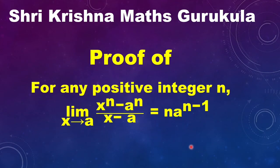Hi students. In this video we will learn the proof of the limit of x to the power n minus a to the power n by x minus a, as x tends to a, equals n into a to the power n minus 1, from the chapter Limits and Derivatives of the first PUC syllabus. This is a very important proof from an examination point of view. In Karnataka PU board exam, they generally give this proof for 2 or 3 marks, so it is very important for you to learn this.